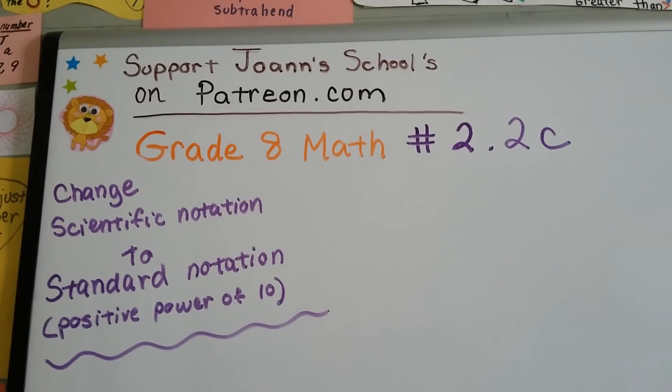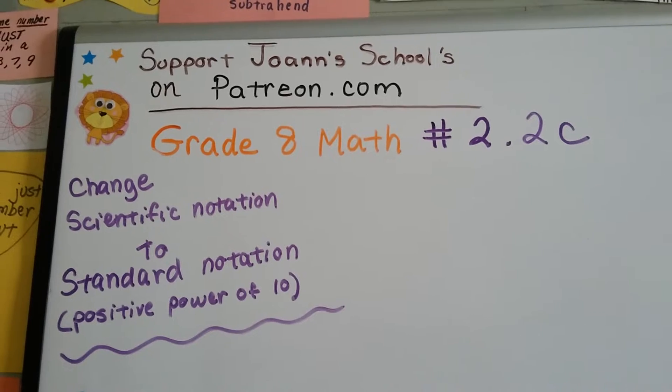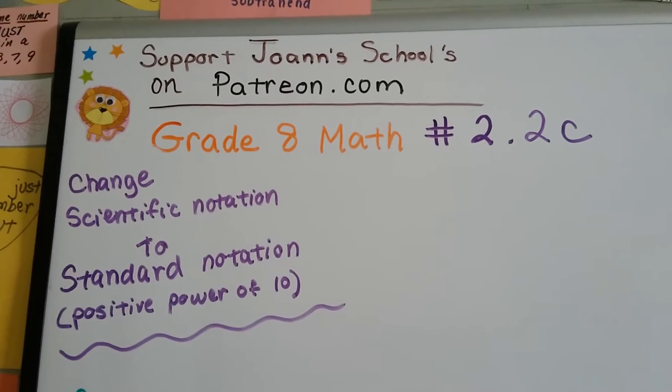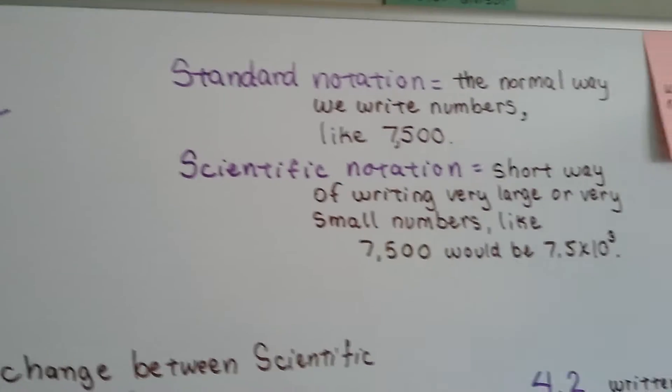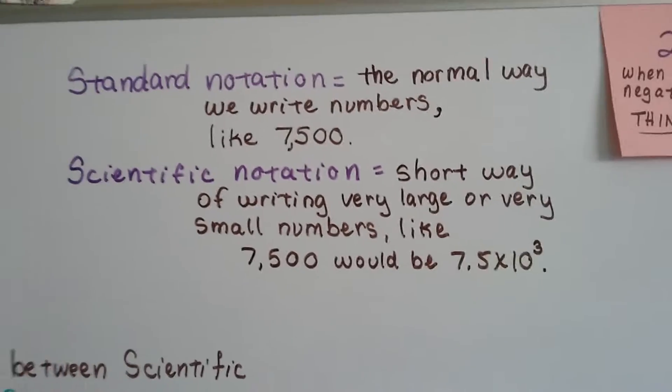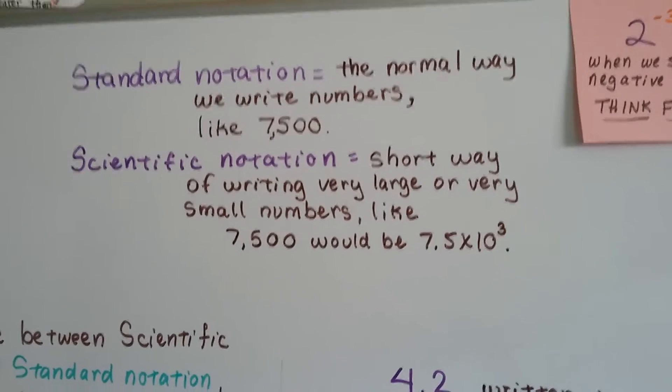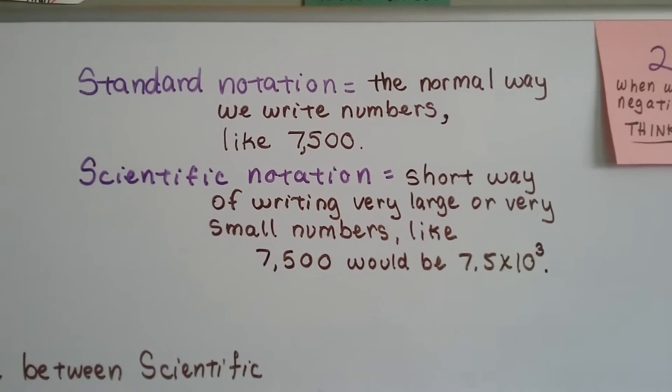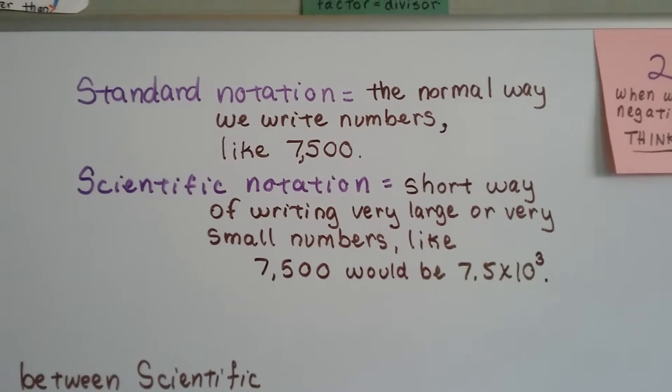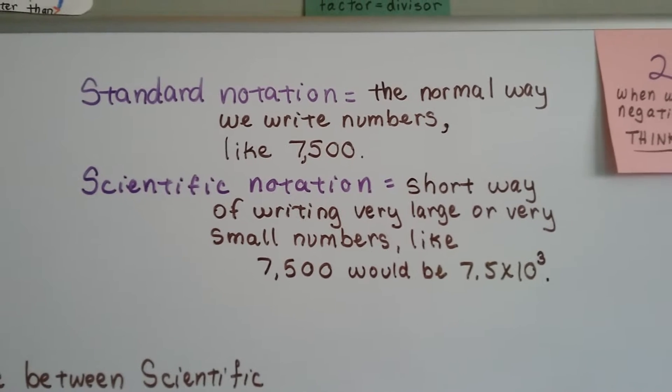Grade 8 math number 2.2c: changing scientific notation to standard notation with positive powers of 10. Standard notation is the normal way we write numbers like 7,500. Scientific notation is the short way of writing very large or very small numbers. Like 7,500 would be 7.5 times 10 to the third.